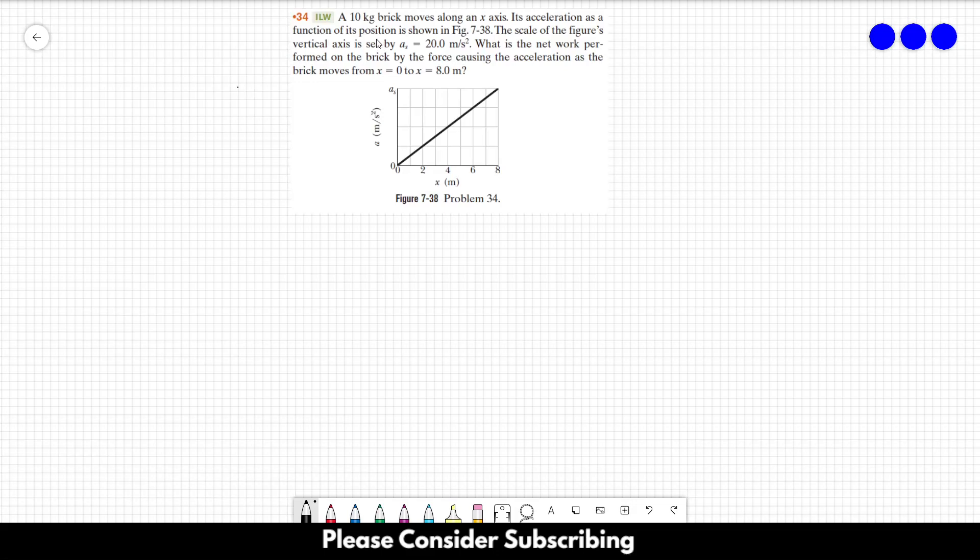Number 34: A 10 kilogram brick moves along an x-axis. Its acceleration as a function of its position is shown in this graph. The scale of the figure's vertical axis is set by a_s equals 20 meters per square second, so this is 20 over here. What is the net work performed on the brick by the force causing the acceleration as the brick moves from x equals 0 to x equals 8 meters?